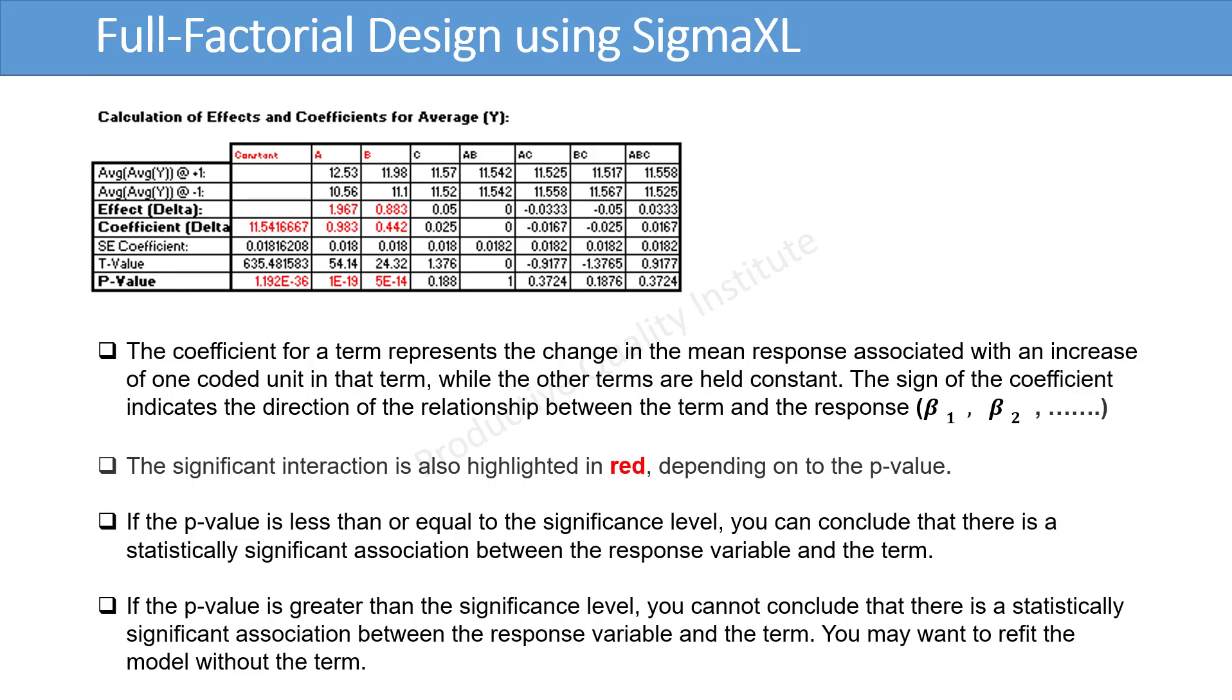The coefficient for a term represents the change in the mean response associated with an increase of one coded unit in that term, while the other terms are held constant. The sign of the coefficient indicates the direction of the relationship between the term and the response, beta 1, beta 2, etc. The significant interaction is also highlighted in red depending on the p-value. If the p-value is less than or equal to the significance level, you can conclude that there is a statistically significant association between the response variable and the term. If the p-value is greater than the significance level, you cannot conclude that there is a statistically significant association between the response variable and the term. You may want to refit the model without the term.